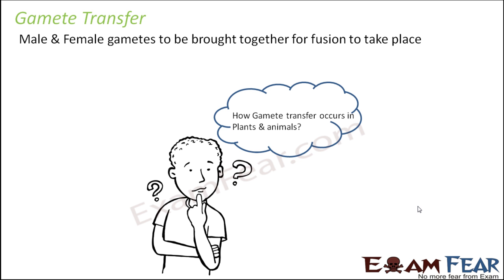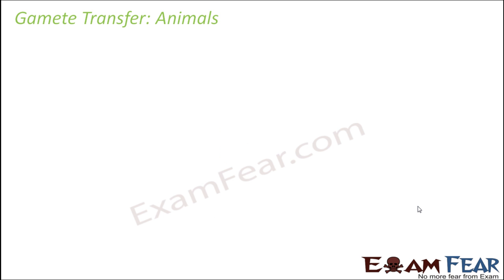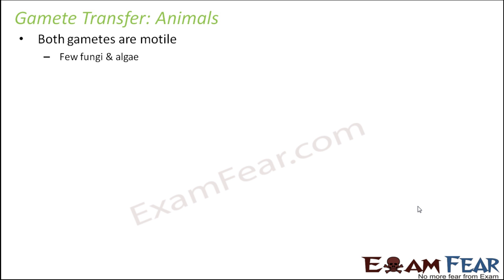How does gamete transfer occur in plants and animals? In animals, there are two possible scenarios. In the first, both gametes are motile — the male gamete and the female gamete are both capable of moving, so they move towards each other and fuse together. This is seen in some fungi and algae — mostly in simpler organisms.